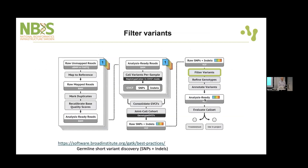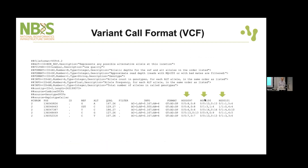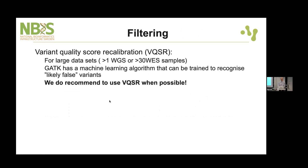The last item we will add to the workflow is a filtering step. Remember the variant call format file — there was actually a column called the filter column. We can populate that column with 'PASS' or 'LowQual'; the description for that column states that LowQual means low quality. This is fairly obvious, but it is useful because many of these variants would perhaps not have enough confidence to be real SNPs.